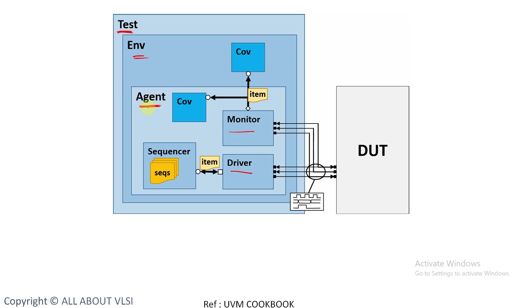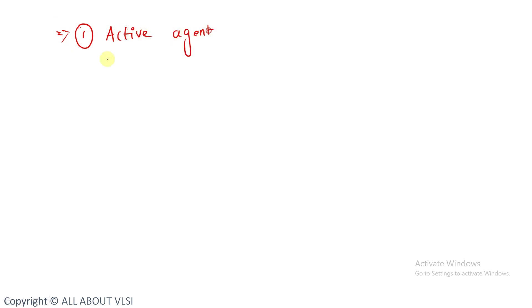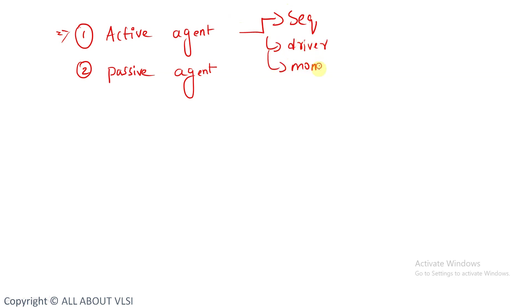A very important point about the agent is that it can be configured. The agent can be of two types: an active agent and a passive agent. An active agent has a sequencer, driver, and monitor. A passive agent has only a monitor. We can configure the agent at runtime to be active or passive. This is the configurability feature of the UVM agent.